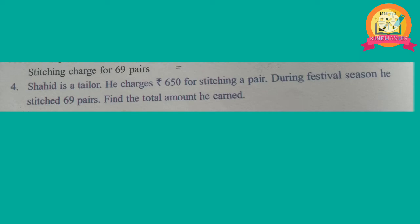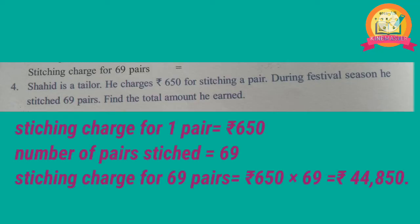The 4th problem is the same but requires constructing sentences. Stitching charge for 1 pair is 650 rupees. Number of pairs stitched is 69. Stitching charge for 69 pairs is equal to 650 multiplied with 69, giving 44,850 rupees.